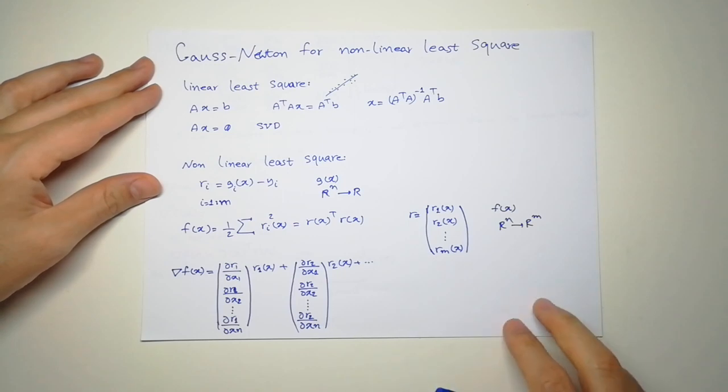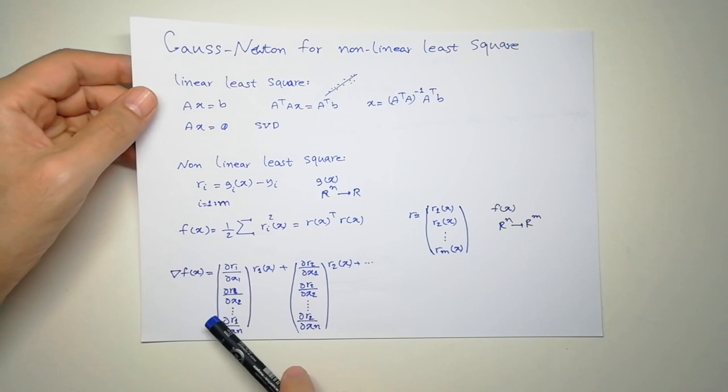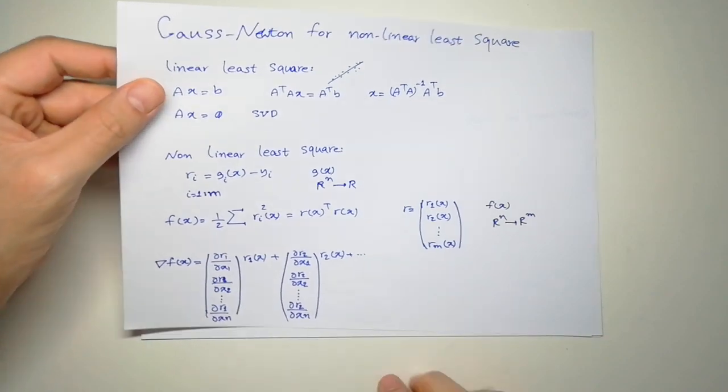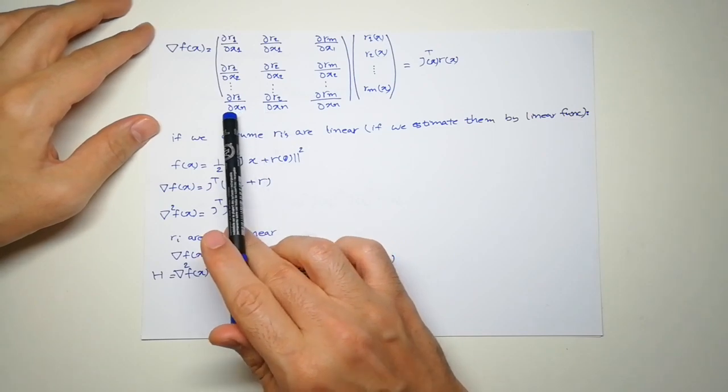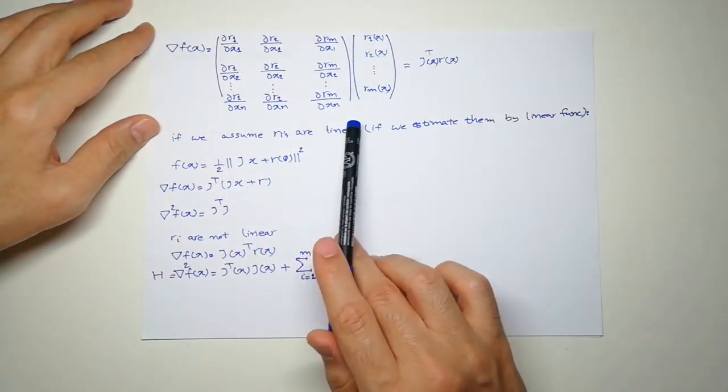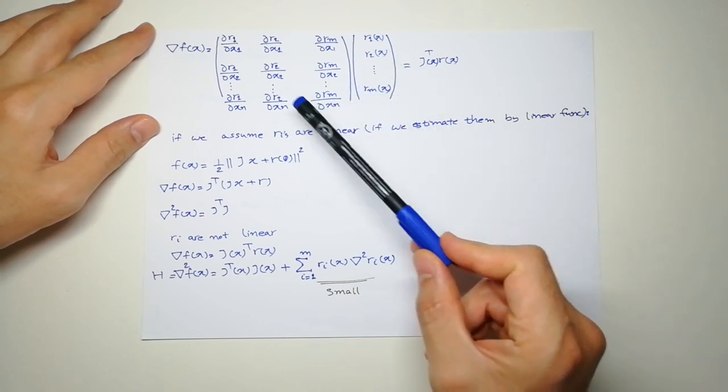If we rewrite this in matrix form, we have this matrix multiplied by this. Based on our definition, this is R.